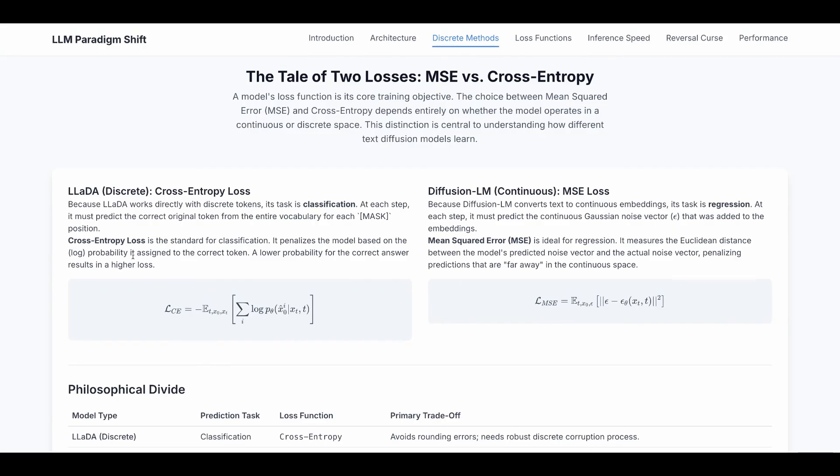In other words, with cross entropy loss we're trying to minimize the difference between predicted classification and the actual original classification. However, for continuous diffusion, for example diffusion LM or analog bits, it's using MSE loss.